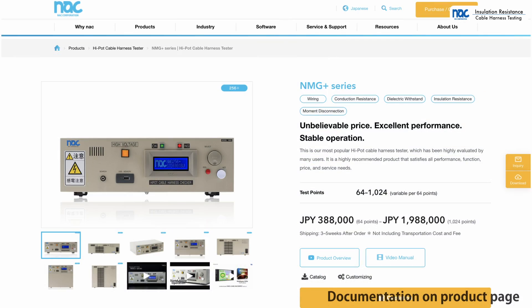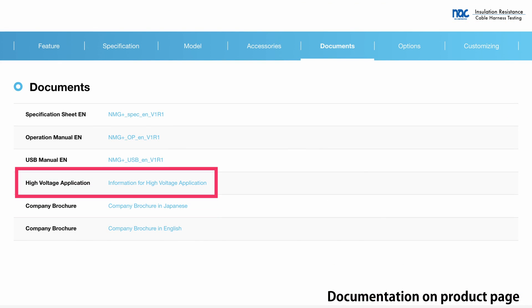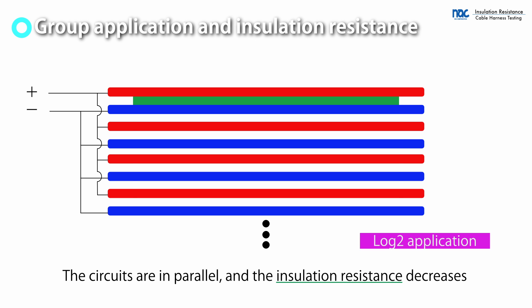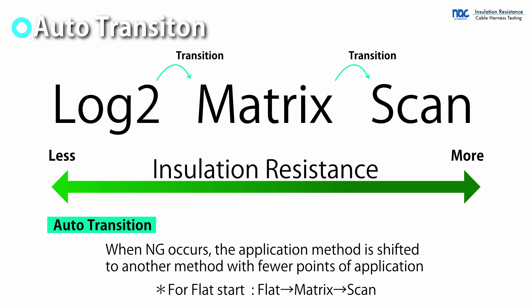The application table for each method can be downloaded from our website. Group application methods, such as Log2, complete the test in a short time. However, the leakage current value increases, making the test more severe. Auto-transition mode is helpful in this case. If the leakage current value exceeds the set value, the application method is automatically switched and the test continues.